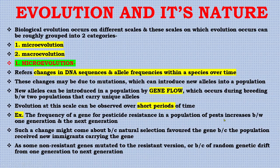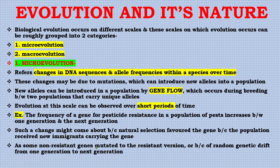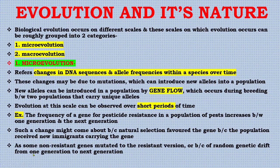Evolution at this scale can be observed over short periods of time. For example, the frequency of a gene for pesticide resistance in a population of pests increases between one generation and the next. Such a change might come about because natural selection favored the gene, because the population received new immigrants carrying that gene, because some non-resistant genes mutated to the resistant version, or because of random genetic drift from one generation to the next.